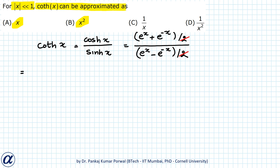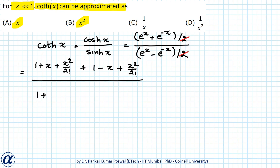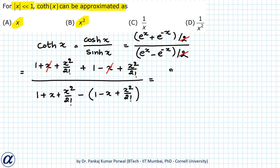So that will be equals to: e to the power x is 1 plus x plus x squared upon 2 factorial, and e to the power minus x will be 1 minus x plus x squared upon 2 factorial — all divided by the same expressions subtracted. The x terms cancel in the numerator, giving 2 plus x squared upon 2 factorial plus x squared upon 2 factorial, which simplifies to 2 plus x squared.